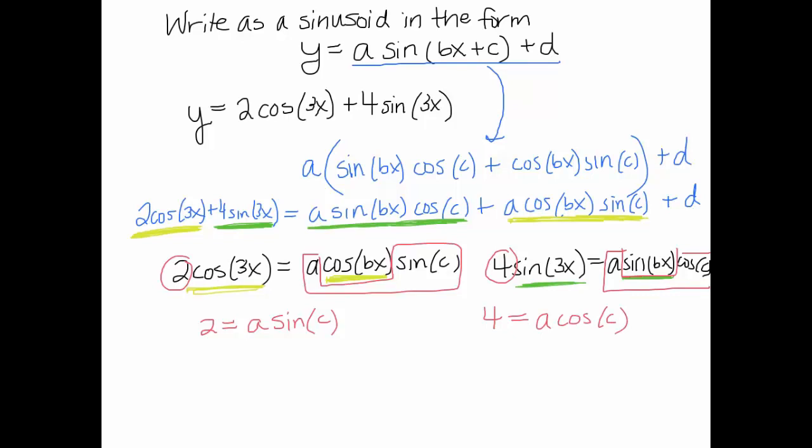This is looking nice because now I have two equations with two variables. I have a nice system I could solve here. I guess I could do substitution. I think I'd rather just divide these equations because then the a's would disappear. So, I'm going to divide this side by the 4 equals a cos c. When we do that, the a's cancel, we get 1 half equals sine c over cos c. Well, that's tan of c. That means that tan inverse of 1 half is what c is. So we have now found c.